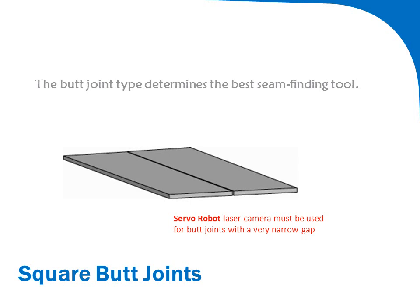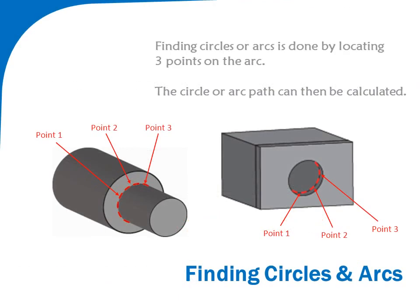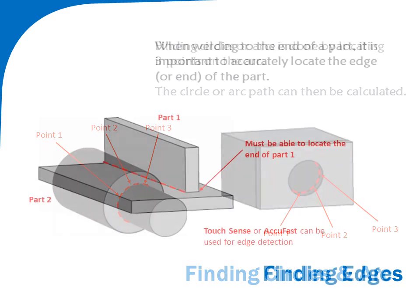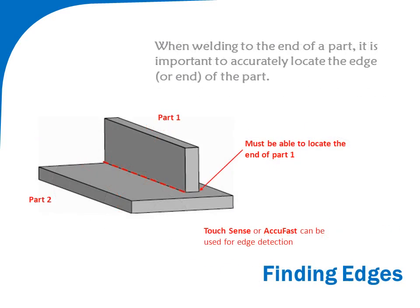Laser cameras can find tightly spaced butt joints or joints with very thin material. Touch sensing and AccuFast find inside and outside circles and arcs. Macro job routines are provided to automatically detect three surface locations, then calculate the radii and center point offset.